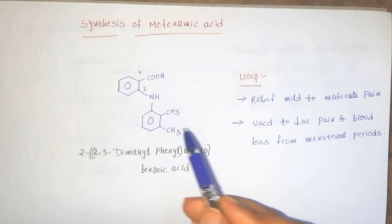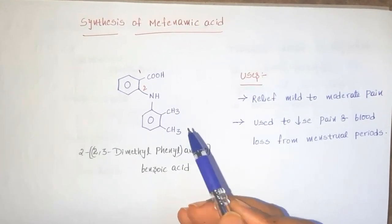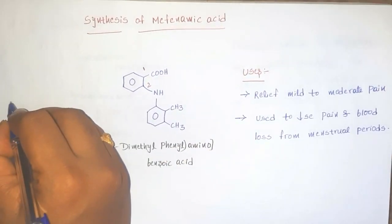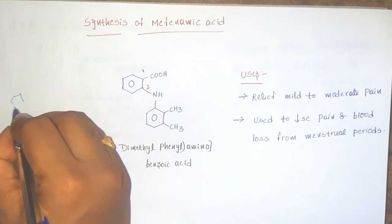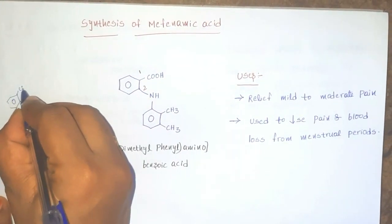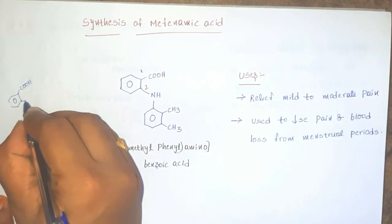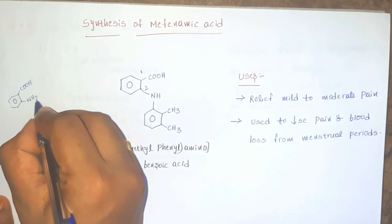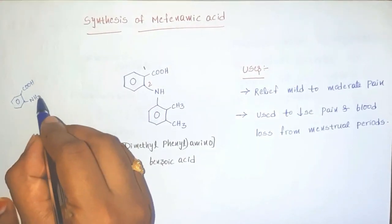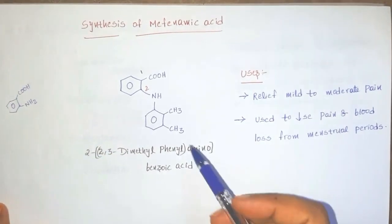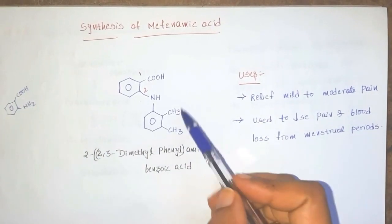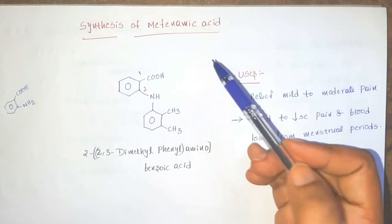It is under the class of n-aryl anthranilic acid. So this is the general structure of anthranilic acid. Replacement of one of the hydrogen and substitute dimethyl benzene, that is called as mefenamic acid.